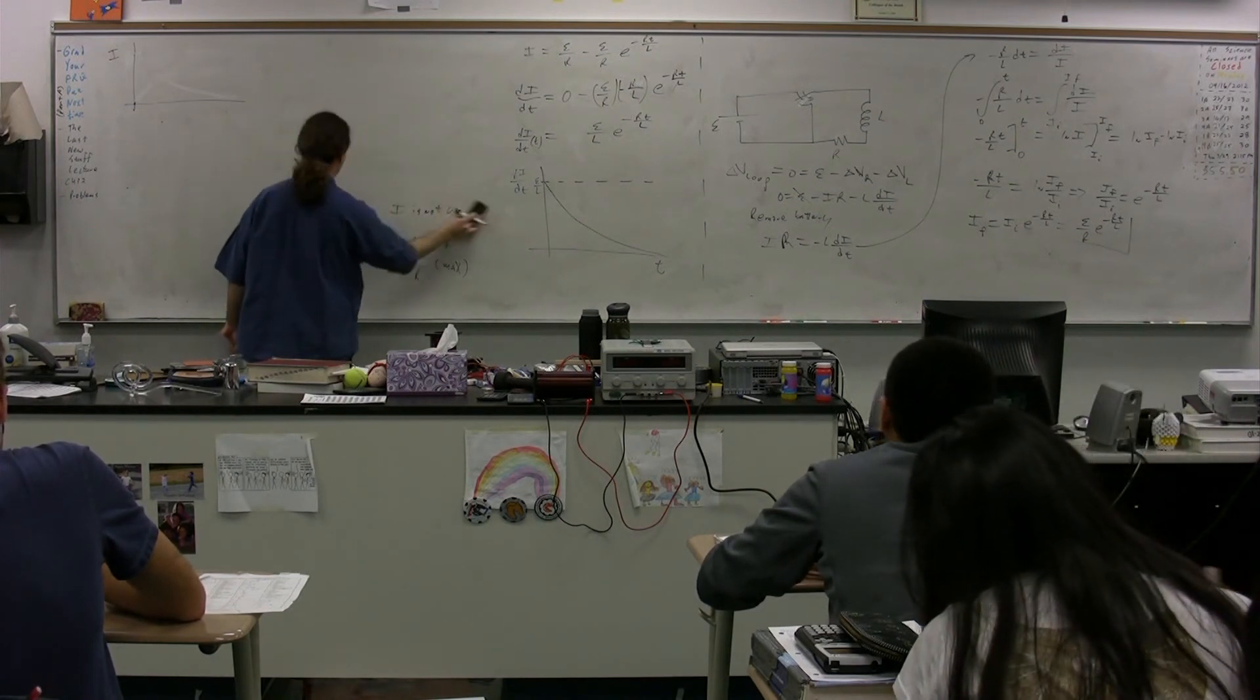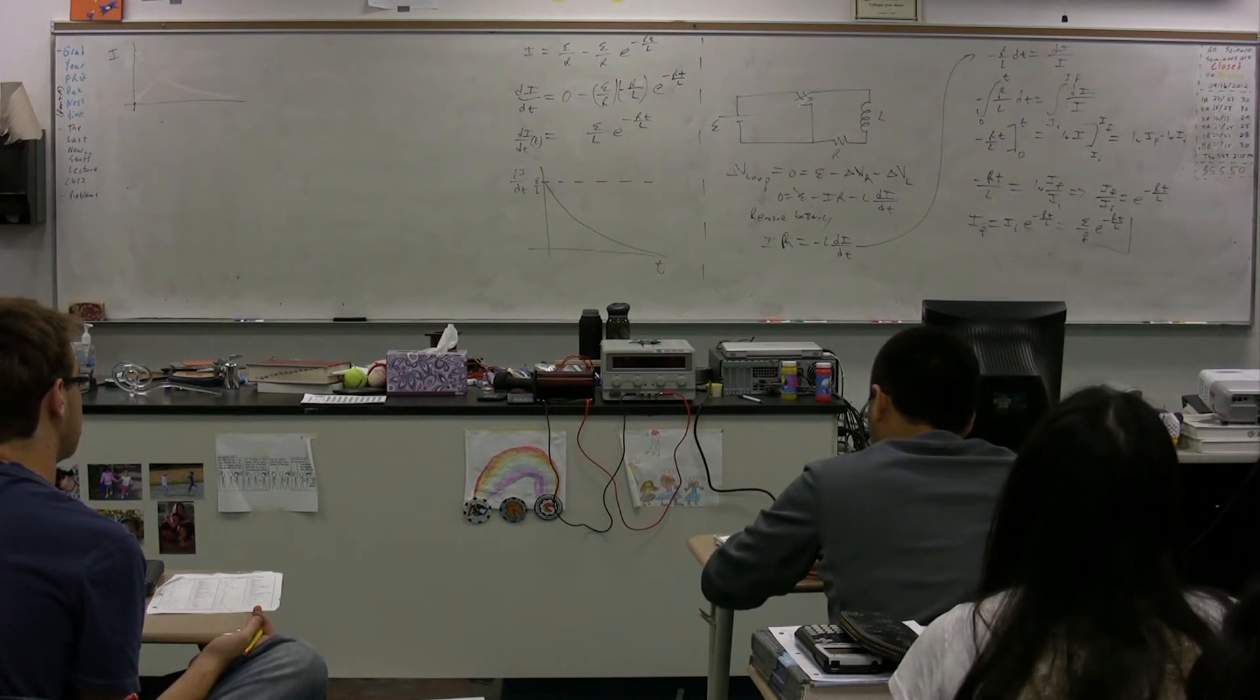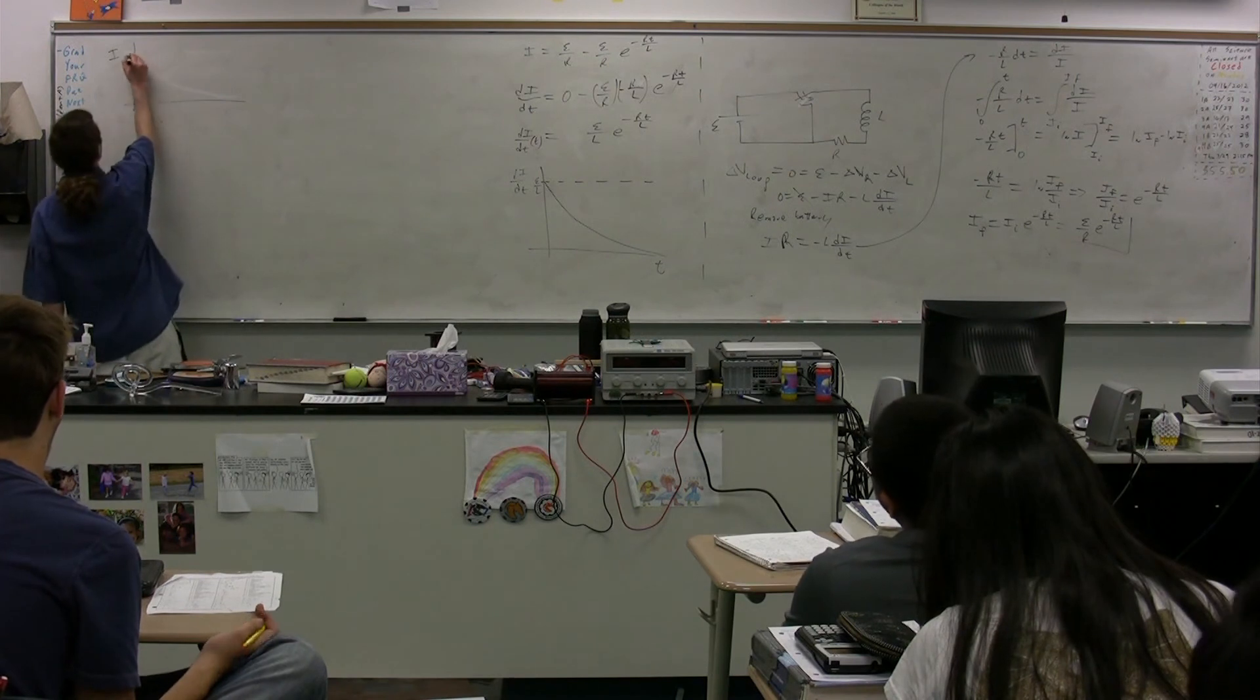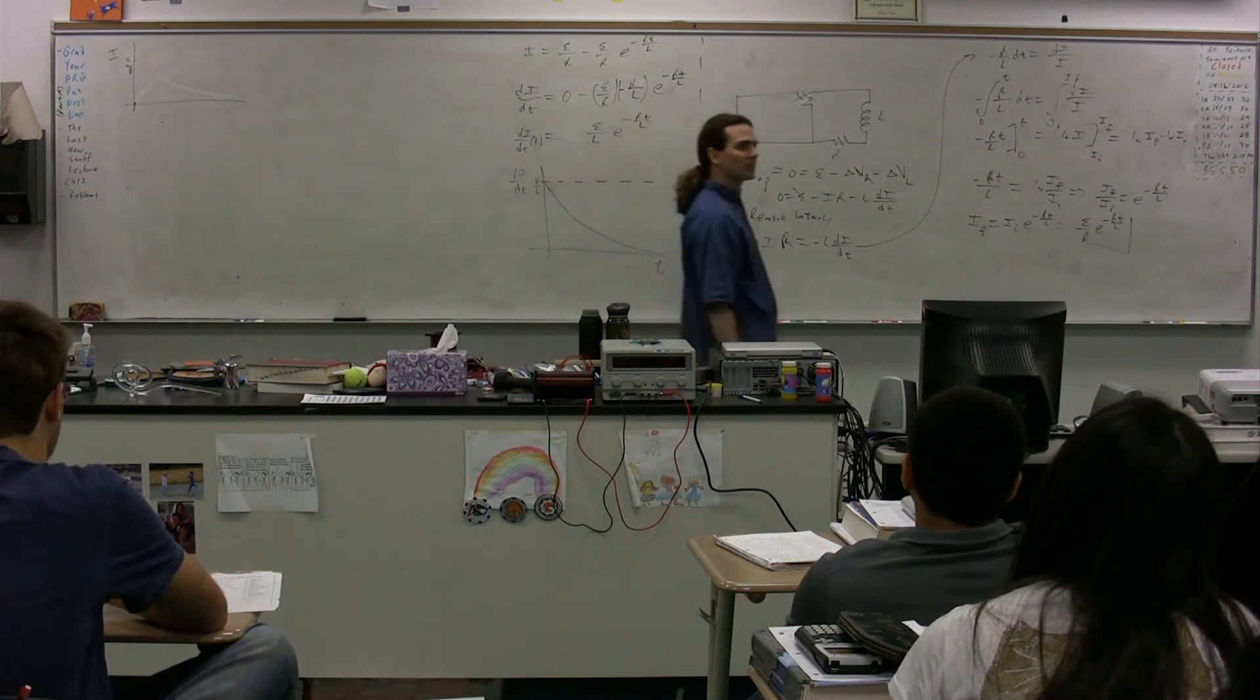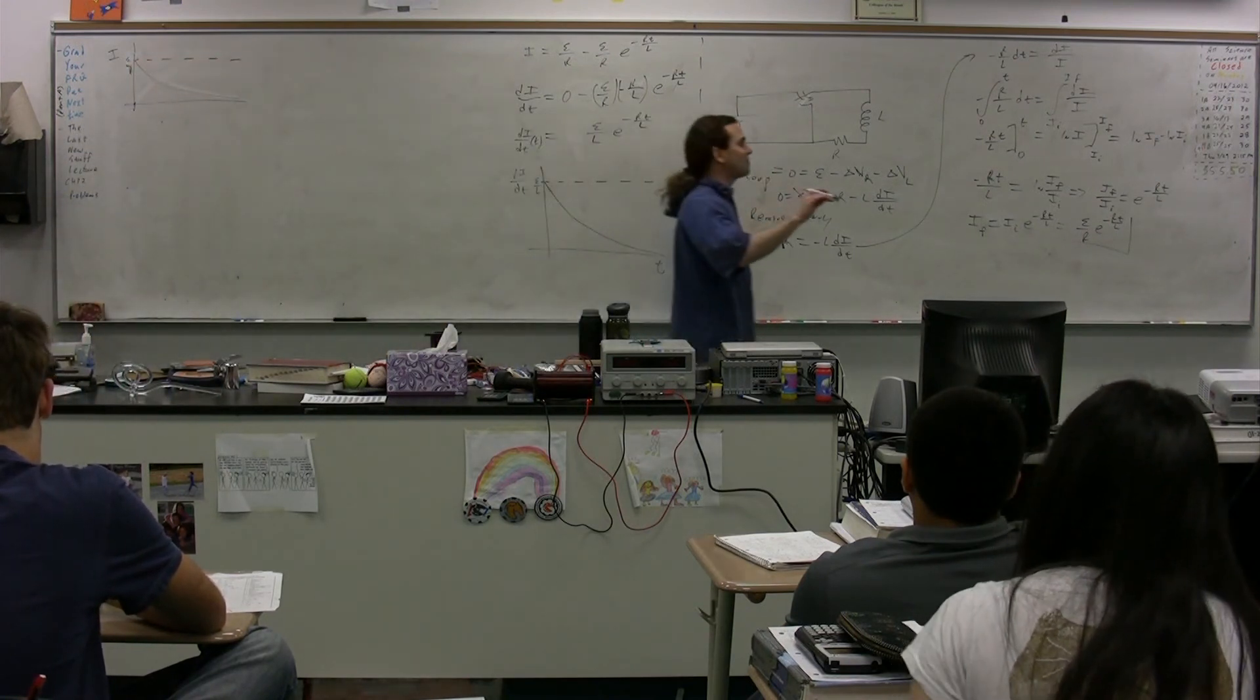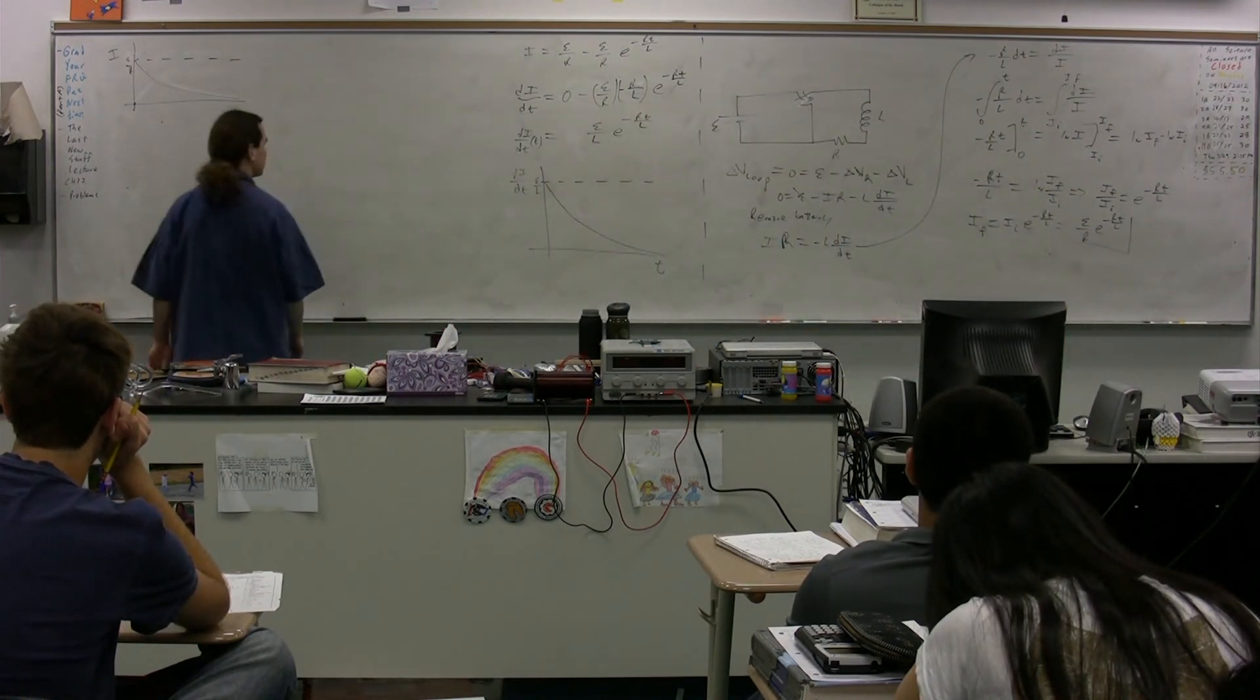So if t is zero, then E to the zero would be one. So the initial current is E over R. The initial current is the EMF over the resistance. And then if t was infinity, it would be zero. And what does it look like between? So the current looks like this. Because what you've got is, instead of what we had before where the initial current was zero, here we start with a current through the inductor, and there is a resistance to that change in the current, and it slowly decreases. Good.